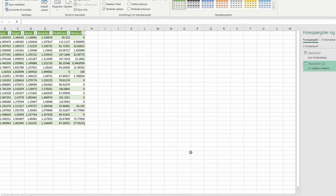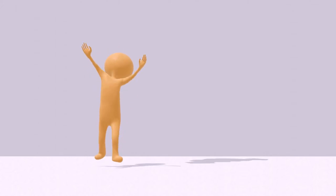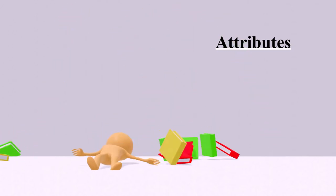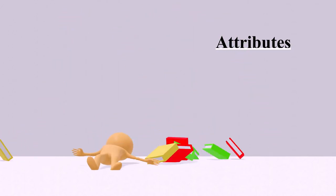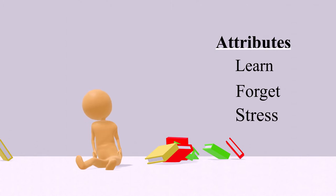But before that, I need to introduce the students. Please forgive the terrible animation — I only have like a month or two of experience. Each student will be created with semi-random attributes, meaning that the attributes are within a specified range. These attributes are how easy they learn, how easy they forget, how easily they get stressed, and how easily they de-stress. However, I must admit that 'forget' didn't make it all the way to the final program.